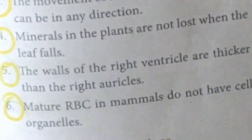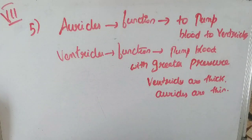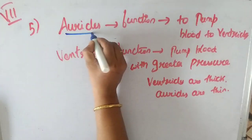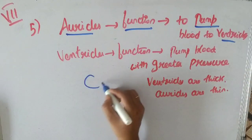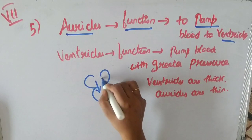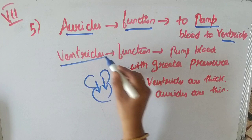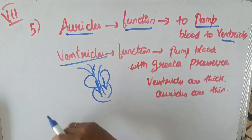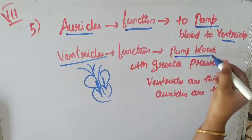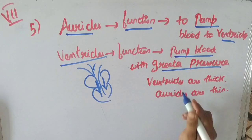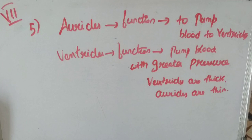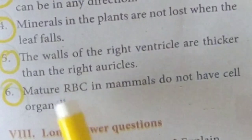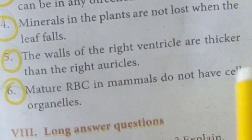The walls of the right ventricle are thicker than those of the right auricle. The auricle's function is simply to pump blood down to the ventricle, so it requires less pressure and its walls are thin. The ventricle, however, must pump blood out to blood vessels under high pressure, which is why the ventricle walls are thick.